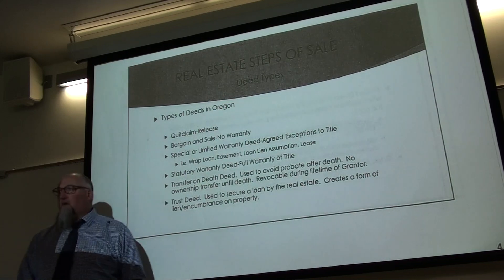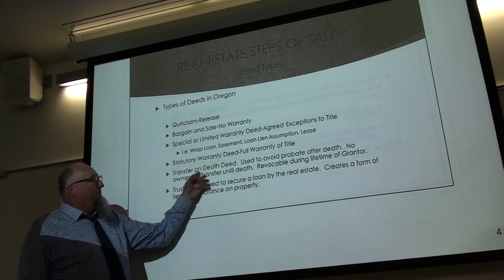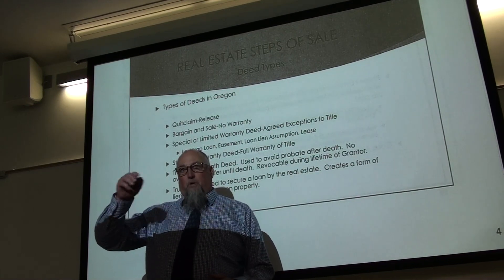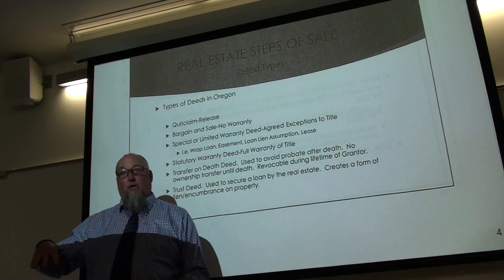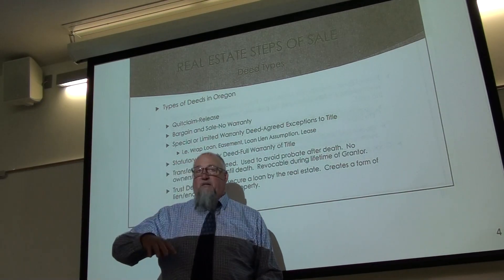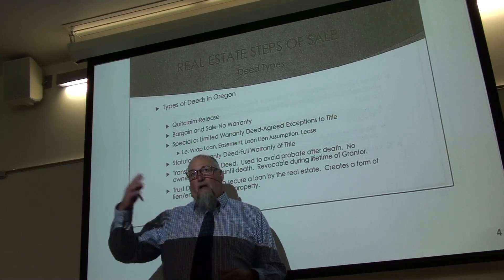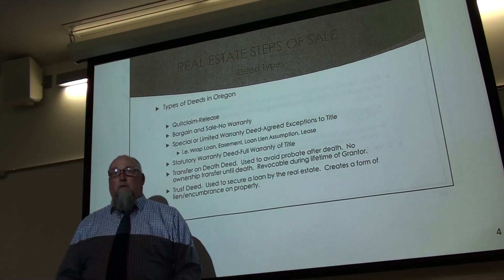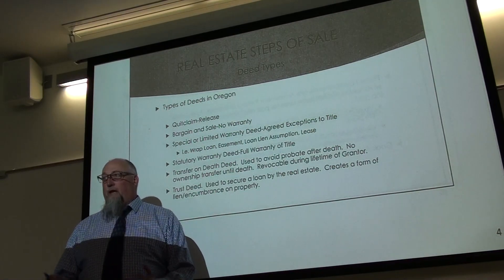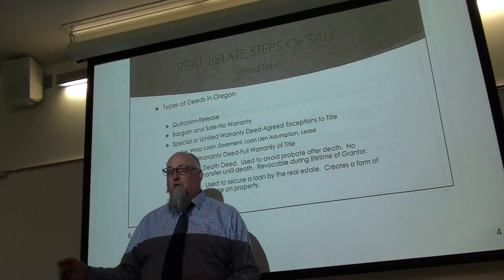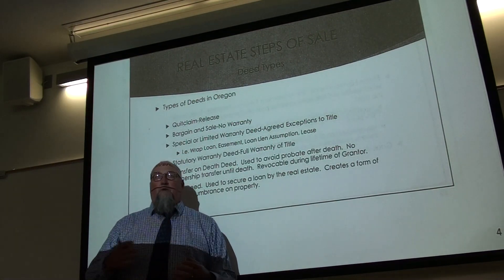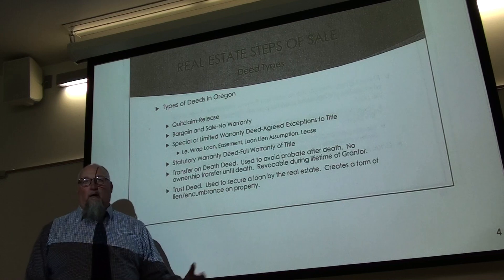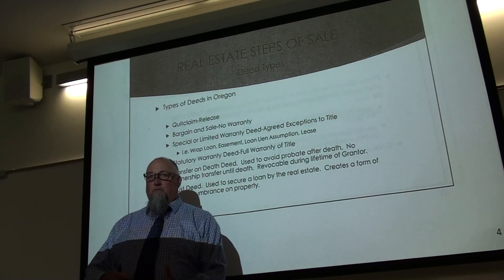A transfer on death deed is fairly new in Oregon. It allows the property owner to name on the deed who they want to inherit the property after they die. The named beneficiaries — for example, your children — are not owners now; they don't become owners until you die. This is a handy way to avoid probate. The deed must be relatively straightforward, such as 'to my three children equally' or 'to the survivor if one dies.'